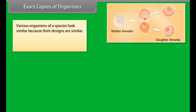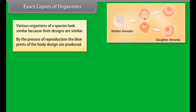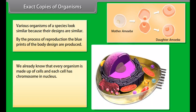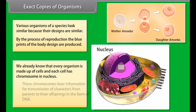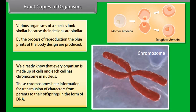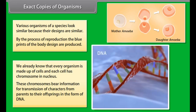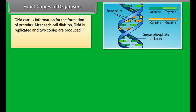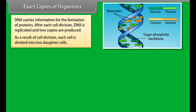Various organisms of a species look similar because their designs are similar. By the process of reproduction, the blueprints of the body design are produced. Every organism is made up of cells, and each cell has chromosomes in the nucleus. These chromosomes bear information for transmission of characters from parents to their offspring in the form of DNA. DNA carries information for the formation of proteins. After each cell division, DNA is replicated and two copies are produced, and each cell is divided into two daughter cells.